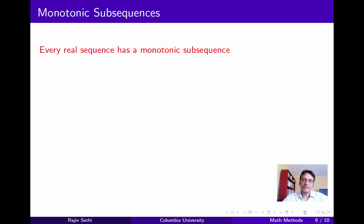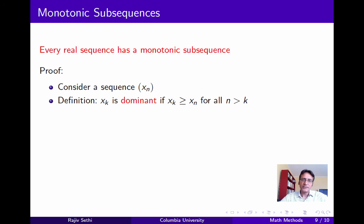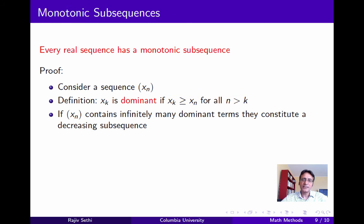Now consider the second claim: every real sequence has a monotonic subsequence. Consider a sequence xn. We say xk is a dominant term if no term appearing later in the sequence is strictly greater than xk. If xn contains infinitely many dominant terms, they constitute a decreasing subsequence — because each dominant term cannot be greater than the previous dominant term by definition. Collecting all dominant terms gives a decreasing subsequence.